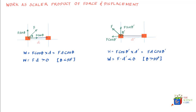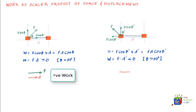In the first case, positive work is happening on the mass because the force is acting in the direction of displacement. In the second case, negative work is happening because the force is opposing the direction of displacement. In summary, if the force and displacement are in the same direction, the force does positive work; if the force acts opposite to the direction of displacement, it does negative work on the mass.